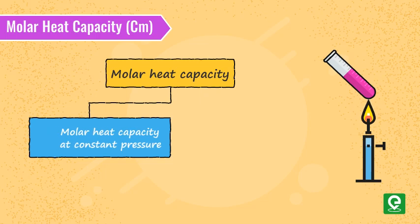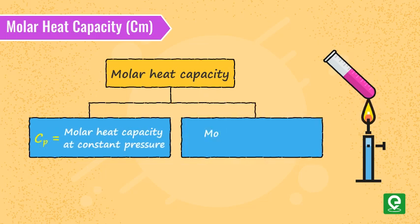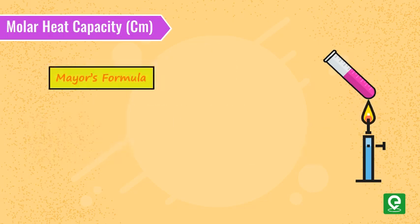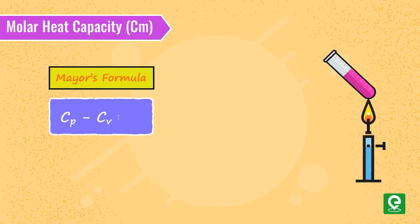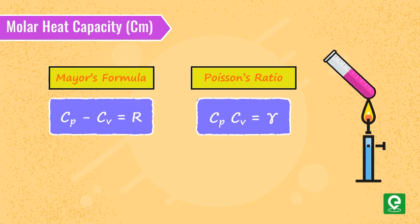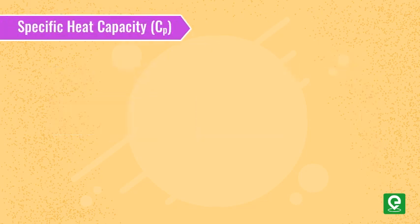Molar heat capacity is further classified into molar heat capacity at constant pressure and molar heat capacity at constant volume. The relation between CP and CV is given by Mayer's formula: CP minus CV equals R. Poisson's ratio gives us CP divided by CV equal to gamma.